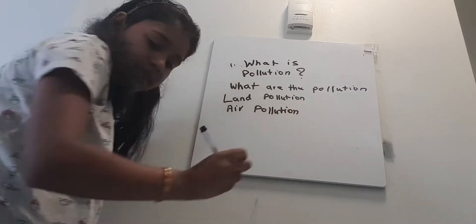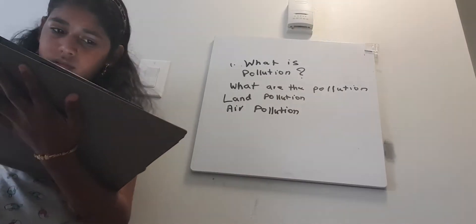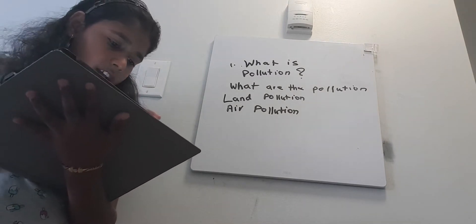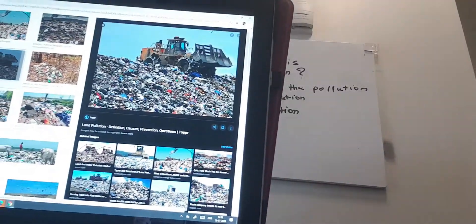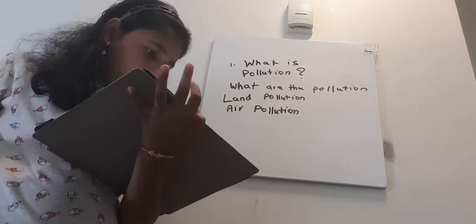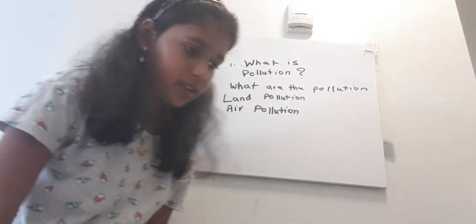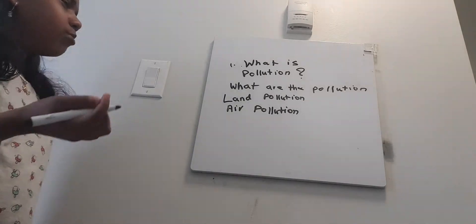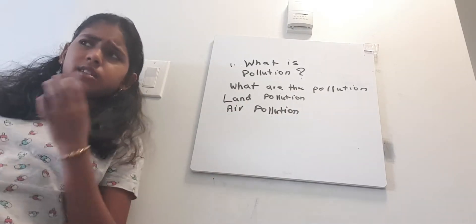An example of land pollution — I can show you guys a picture. Land pollution is basically dumping on the land, something like this. Now let's think about what air pollution is. Air pollution is caused by gases which are released — random gases in factories.